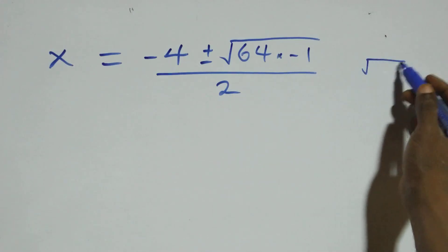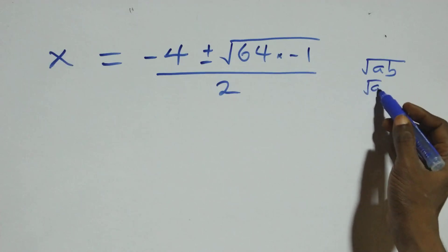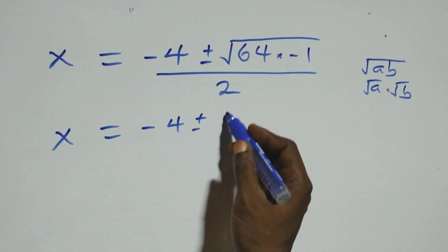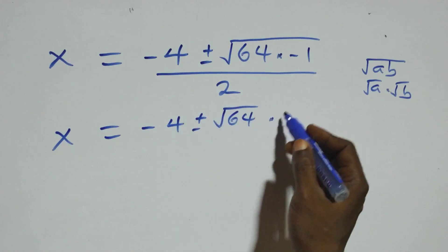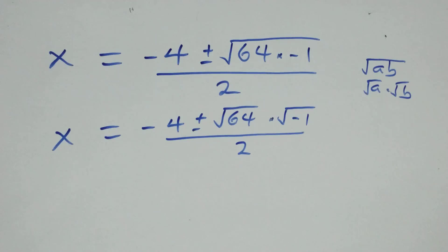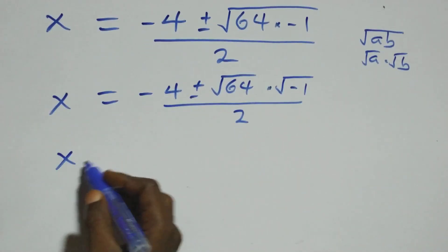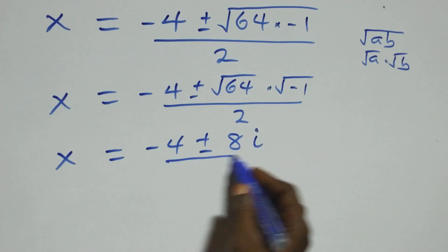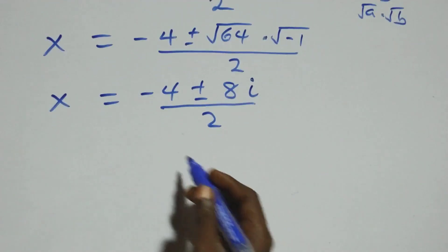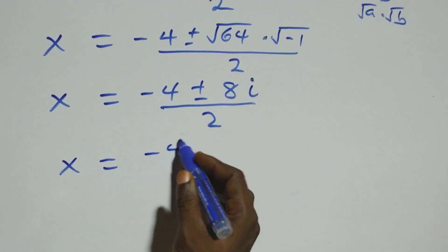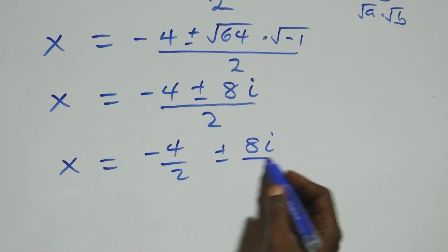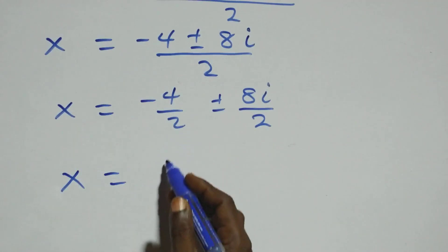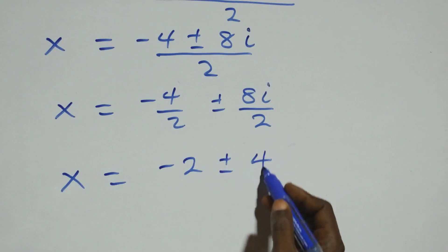Using the property that root of A times B can be written as root A times root B, we get x equals minus 4 plus or minus root 64 times root minus 1, all over 2. Root 64 is 8, and root of minus 1 is i, so x equals minus 4 plus or minus 8i, all over 2. Separating this: x equals minus 4 over 2 plus or minus 8i over 2, which gives x equals minus 2 plus or minus 4i.